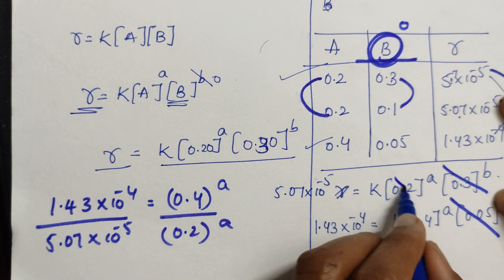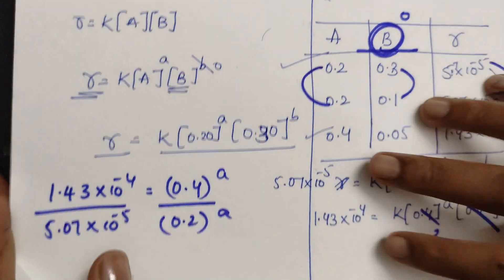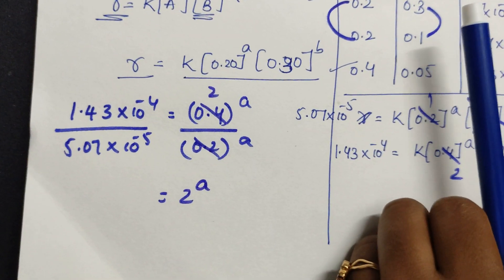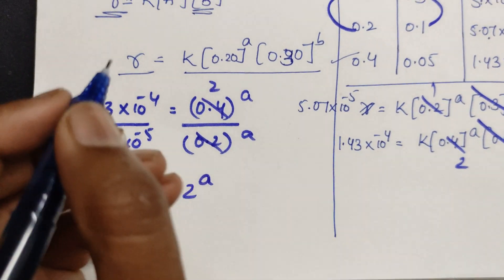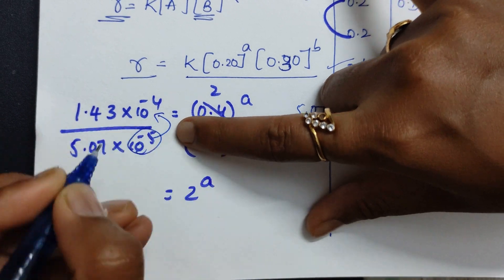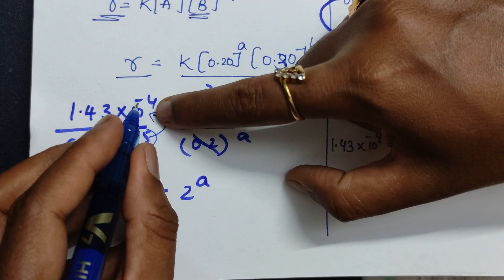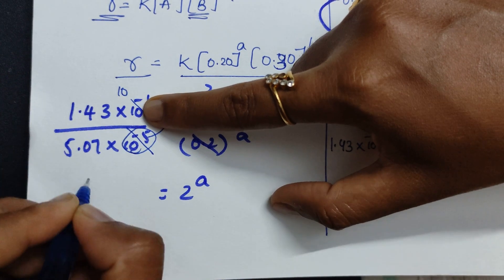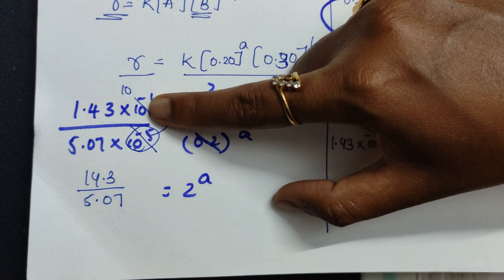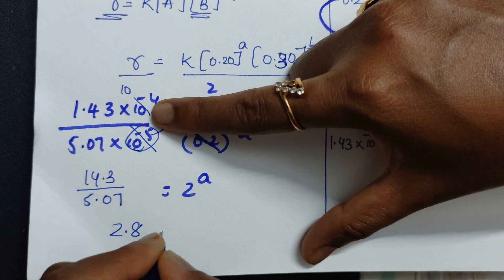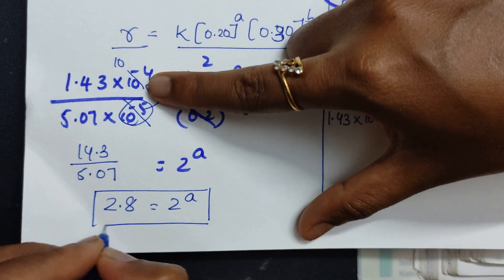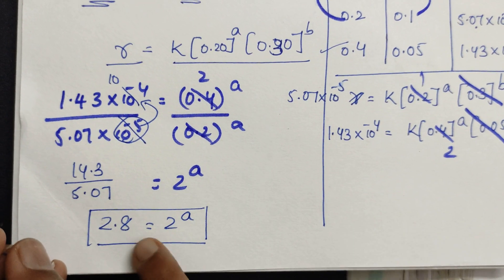One sir, two sir — directly you can do in your mind. You get 2.8. Here is the main thing students find difficult: 10 power minus 4 and 10 power minus 5, when taken to the other side gives 10 power 5 and the remaining 10 gives 14.3 divided by 5.07, which comes to around 2.8. So 2.8 equals 2 to the power of A.